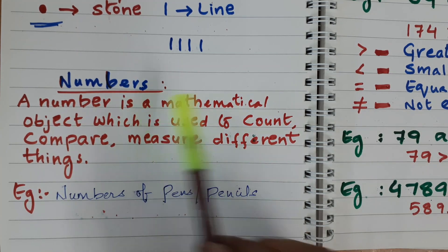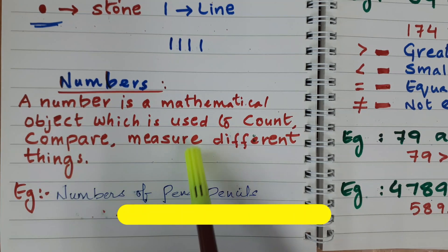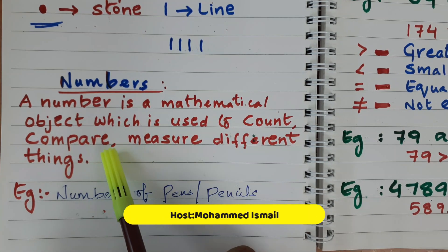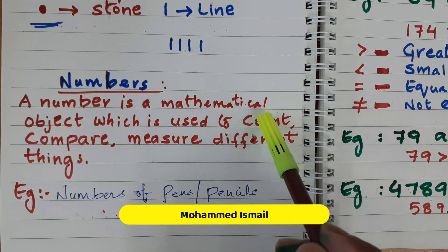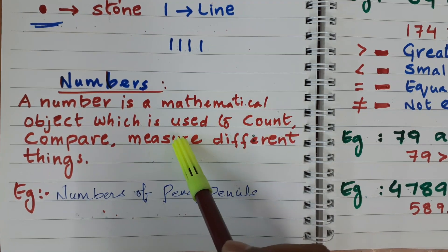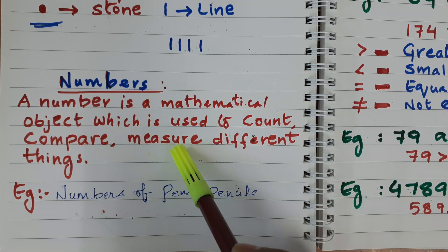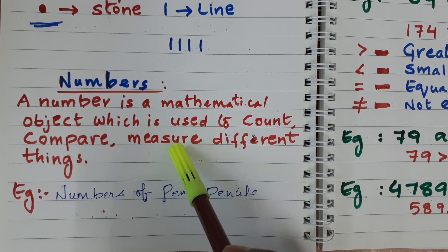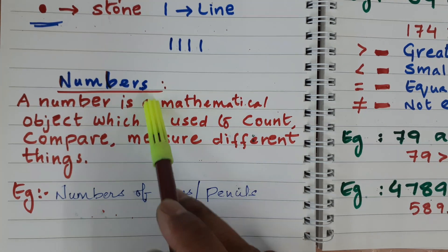We use these numbers for counting purpose and comparing and measuring the things. Sometimes you have to compare two numbers, compare two things and for counting purpose and also measuring. For example, you want to measure how much weight of something, like vegetable 1 kg, 2 kg like that. We use these numbers.